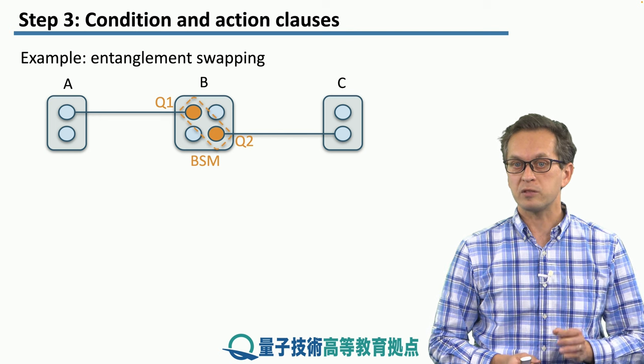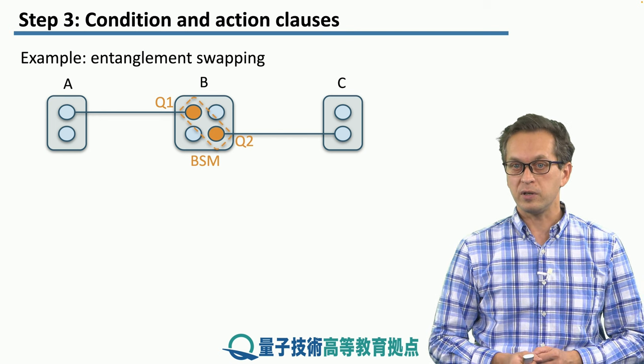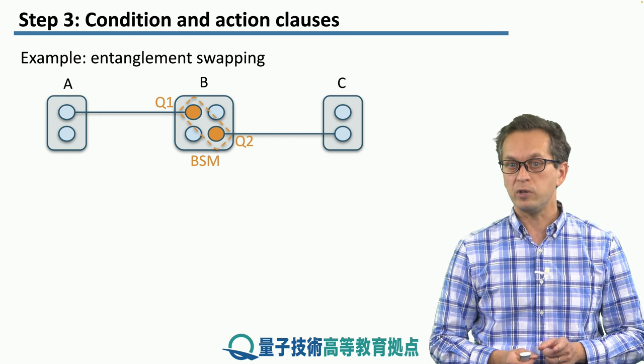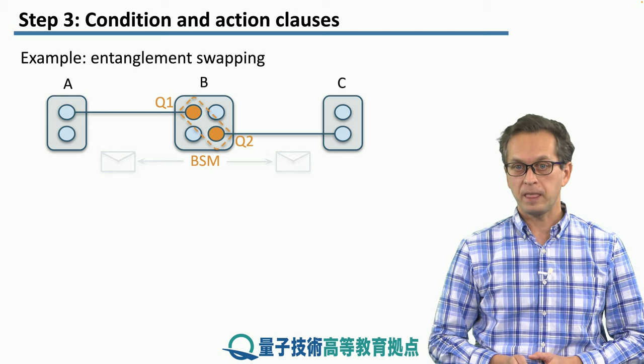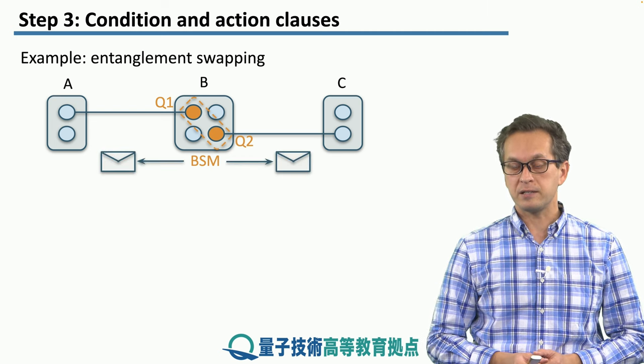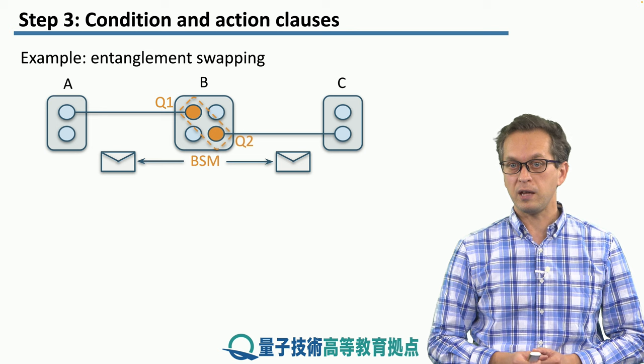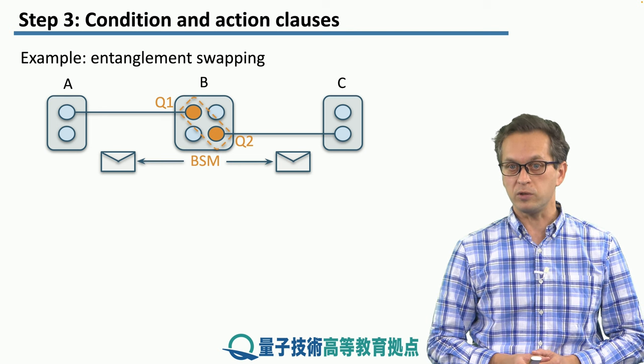So B must know that it has to perform entanglement swapping, or the bell state measurement, on qubit 1 and qubit 2, and send the classical message informing node A and node C of what the classical measurement outcome was.